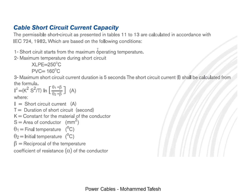All these equations were derived from the International Electrotechnical Commission, and all companies in the world must follow and implement these equations when they design power cables. Short circuit starts from the maximum operating temperature. Maximum temperature during short circuit for XLPE equals 250 degrees Celsius, and for PVC equals 160 degrees Celsius. Maximum short circuit current duration is 5 seconds.